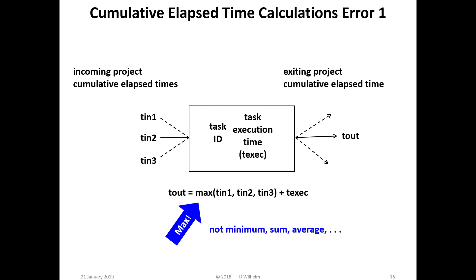One common error in using the PERT diagrams is calculating the start time. The task start time is the maximum of the end times of the prerequisite tasks. Not the minimum, the sum, the average, the square root of the sum of the squares. Just the maximum.